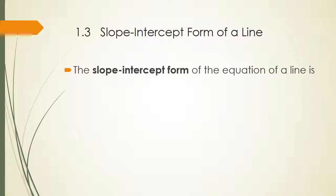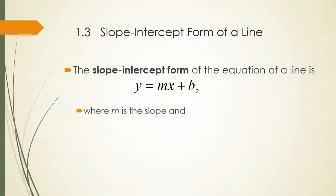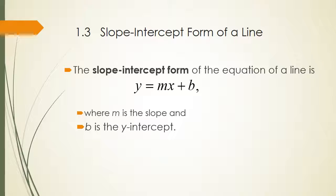Slope-intercept form of the equation of a line is y equals mx plus b — probably the most popular form. m represents the slope and b represents the y-intercept, the value of y when x is zero.